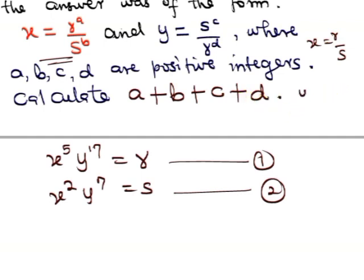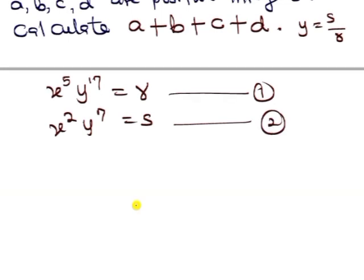While we will get y to be in terms of s over r, and whatever is the power of s will be c and the power of r will be d. So now to be able to do that, what are we going to do? We will try to make one of the variables have the same powers and then we will divide. We can do that for x or for y.